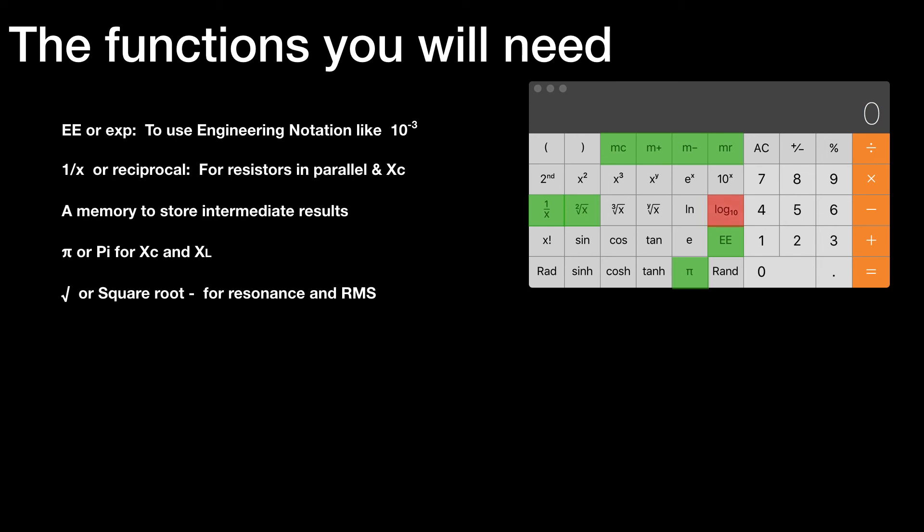Now these two are nice to have but not really necessary as far as I can see. Log to the base 10 helps you convert factors into decibels. For example, if you put in 2, take the log of it, and then multiply that by 10, that will give you the dB equivalent of 2 times, in other words, 3 dB.